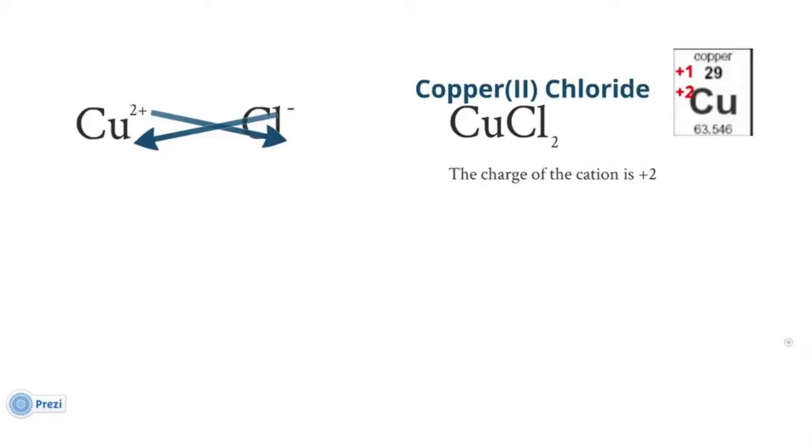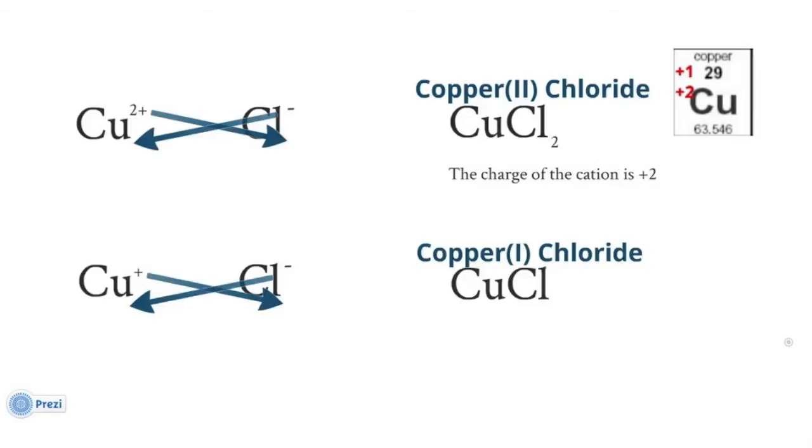Now let's look at the copper which is a charge of plus 1. When that combines with chlorine, we get CuCl and we would say that as copper 1 chloride because the charge of the cation is plus 1.